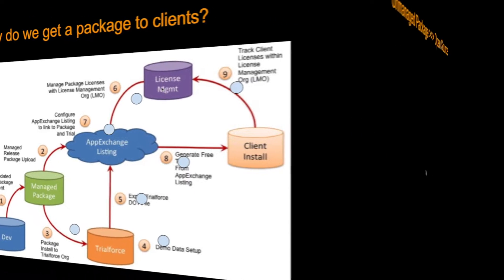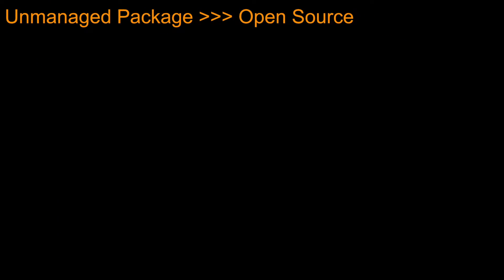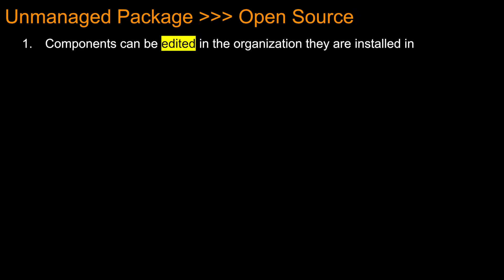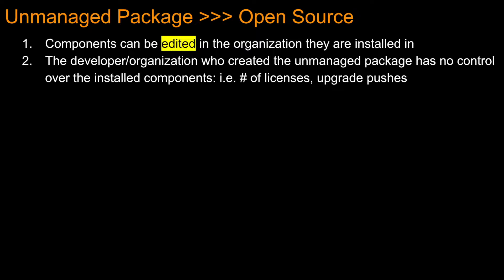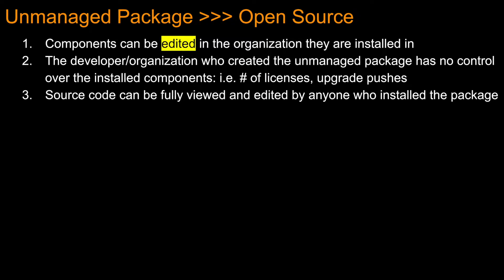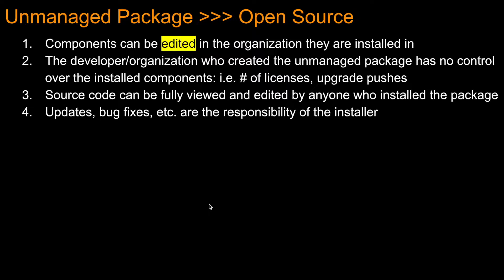What is an unmanaged package? The defining feature of an unmanaged package is that it is open source. That means components can be edited in the organization where they are installed. The developer organization who created it has no control over the installed components - they cannot control the number of licenses or push upgrades. The source code, including Visualforce page code and Apex code, can be fully viewed and edited by anyone who installed the package.